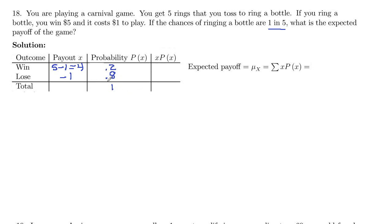Now we just multiply straight across. Four times 0.2 is 0.8, and negative one times 0.8 is negative 0.8. If you add these up, you get zero. So our expected payoff, which is the sum of the x times probability column here, is zero.